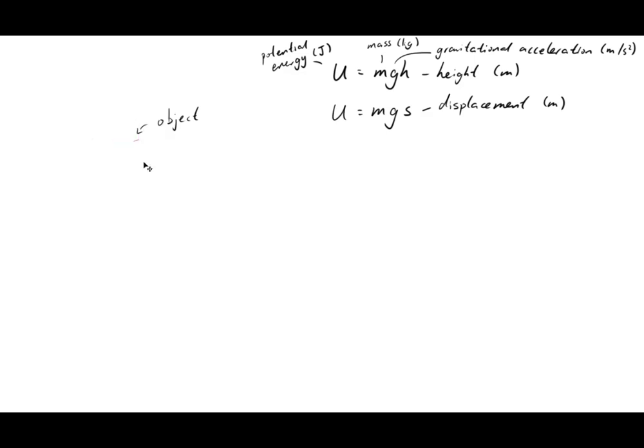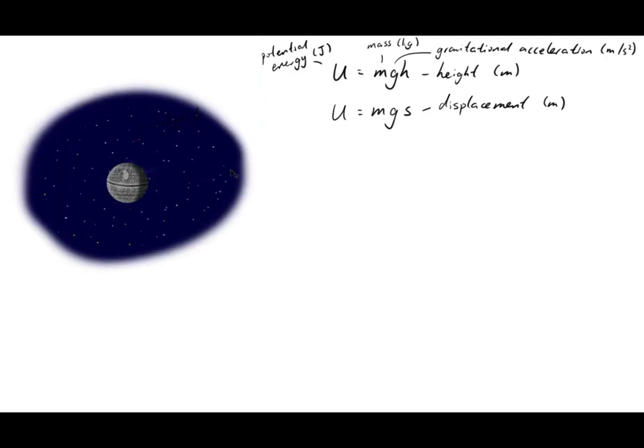Now, let's say this object was moved to some arbitrary gravitational field. Then g, the gravitational acceleration of the Earth, would no longer apply. Instead, let's call the new gravitational acceleration due to this new gravitational field, a.